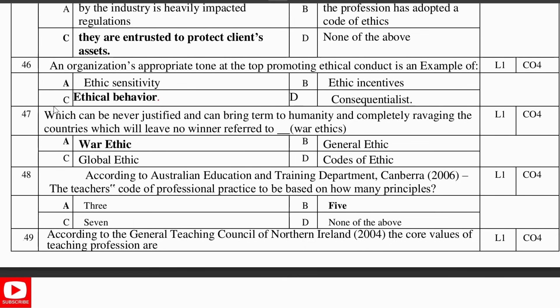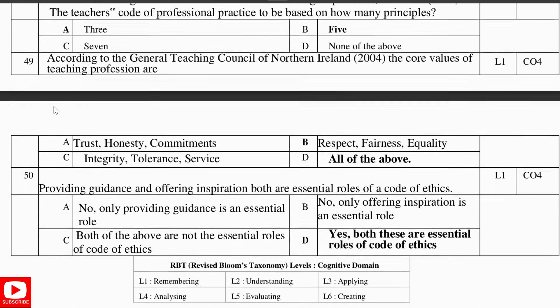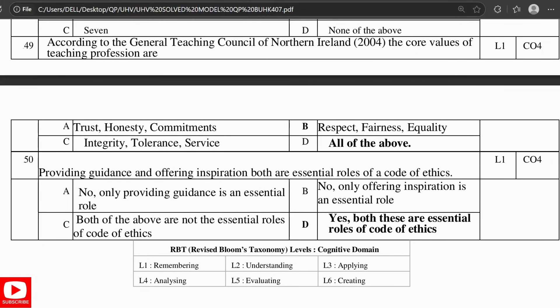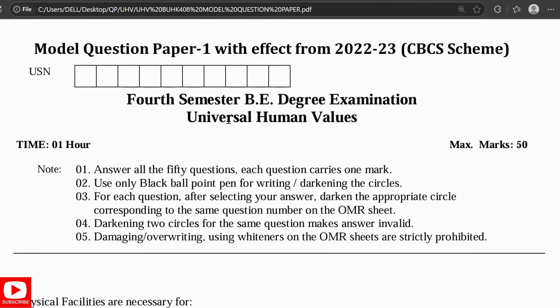According to the Australian Education and Training Department, Canberra 2006, the teacher's code of professional practice is to be based on how many principles? Answer: Five principles. According to the General Teaching Council of Northern Ireland 2004, the core values of the teaching profession are: trust, honesty, commitment, respect, fairness, equality, integrity, tolerance, and service — all of them. Providing guidance and offering inspiration — both are essential roles of the code of ethics. This was all about the first set of the question paper. Now we will move on to the second set of model question paper.